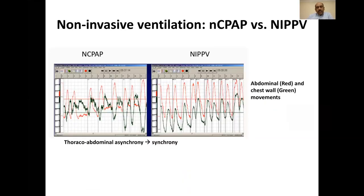This is a tracing from a baby who is a 25-weeker. The graph shows abdominal movements in red color and chest wall movement in green color. On the left side, the patient is on nasal CPAP, and on the right side, on non-invasive positive pressure ventilation. You can see the thoracoabdominal asynchrony that was more obvious in nasal CPAP converts into more synchronized breathing when the patient is put on NIPPV.